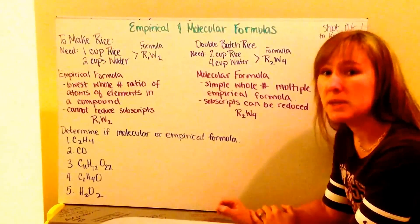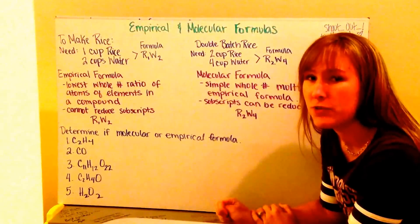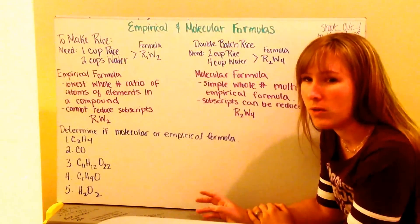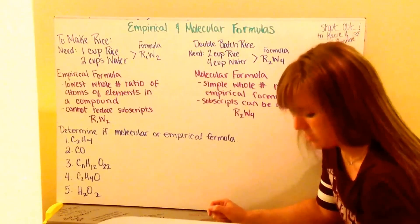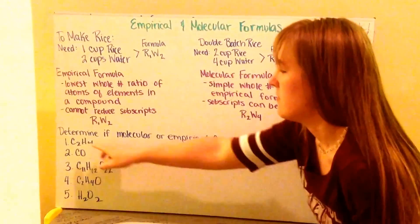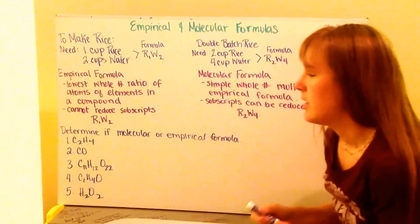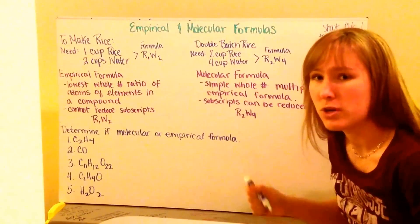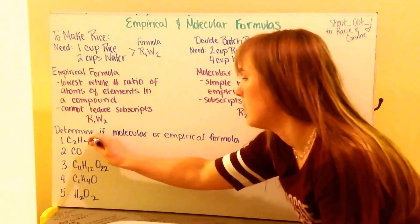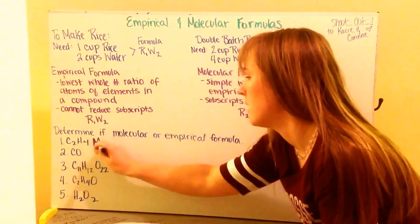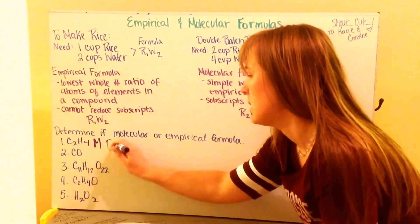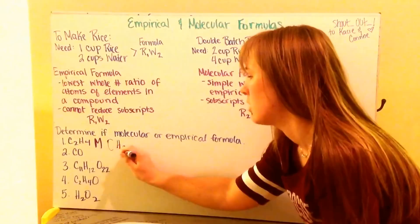Something we need to be able to do is determine if a formula given to us is in its empirical state or molecular state. Let's go through a couple of examples. Here I have C2H4. My subscripts two and four can each be reduced by two, causing this to be a molecular formula, and my empirical formula would have been CH2.